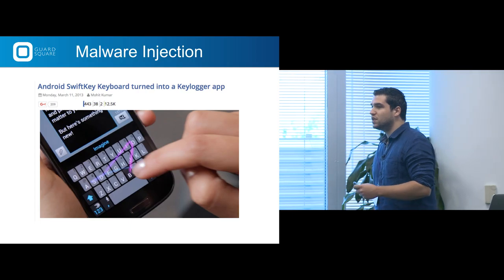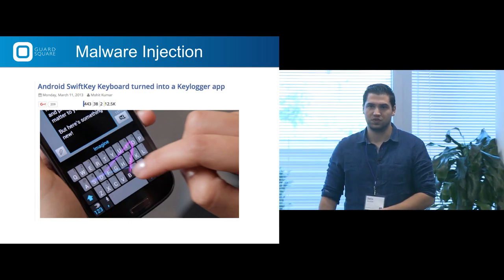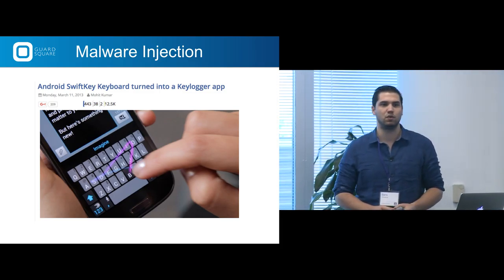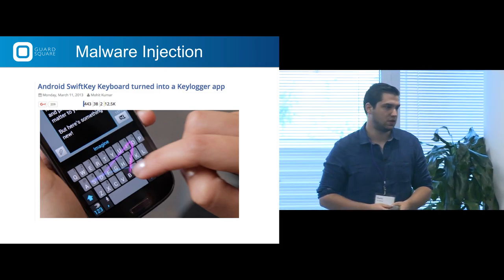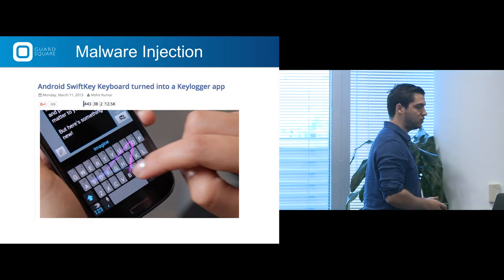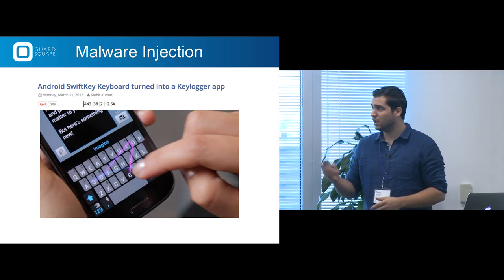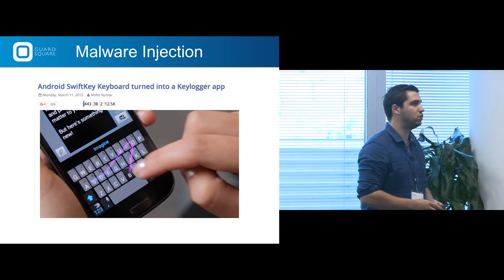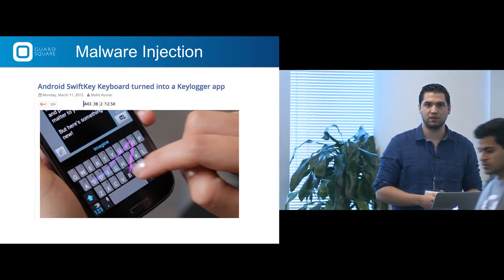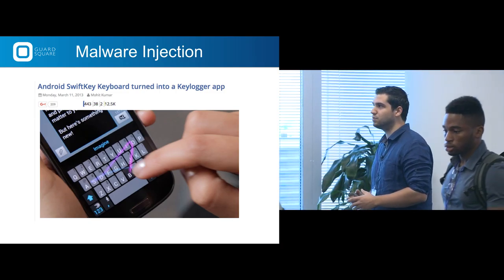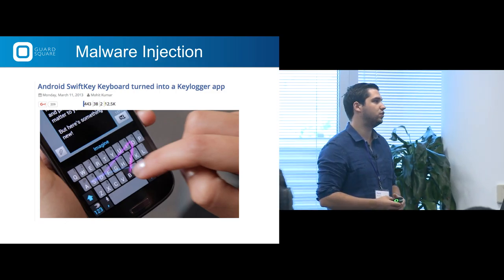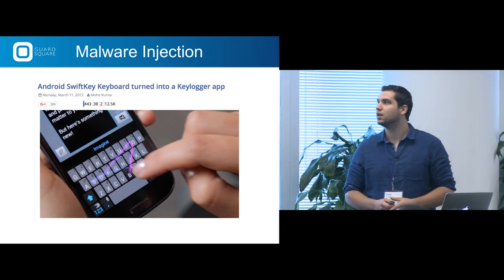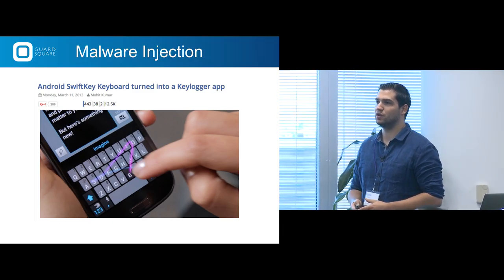This is the Android SwiftKey keyboard application. It's a very popular application that uses some artificial intelligence to give you better suggestions with your auto-correction. You had a paid and a free version. The paid version was put online as a pirated version, so you could use all the paid options for free. But the hacker also introduced a keylogger in the app — so your keyboard application is now a keylogger, which is typically not something you want on your device.